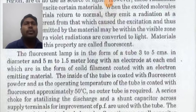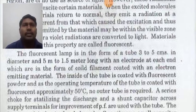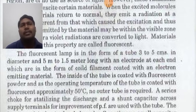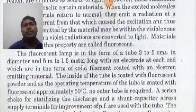The fluorescent lamp is in the form of a tube, three to five centimeters in diameter and 0.5 to 1.5 meters long, with an electrode at each end in the form of a coiled filament coated with an electron emitting material. The inside of the tube is coated with fluorescent powder and the operating temperature is approximately 50 degrees centigrade. No outer tube is required.